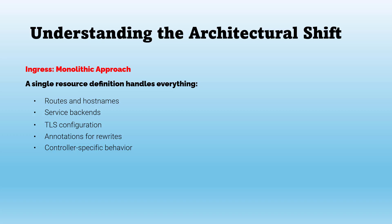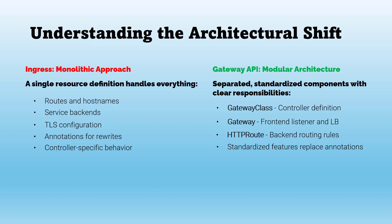On the right hand side we have the Gateway API, which follows a modular and modern architecture. Everything is broken into clear, independent components: a GatewayClass that defines which controller will implement the gateway, a Gateway that defines the frontend listeners like port, TLS and IPs, and an HTTPRoute that defines backend routing like paths, hosts and services. Instead of controller-specific annotations we now use standardized features and filters. So the idea is simple: Ingress equals one big file, and Gateway equals small, clean, modular files with clear responsibilities. This separation makes Gateway API much easier to manage in production, especially with multiple apps, multiple teams, or complex routing logic.